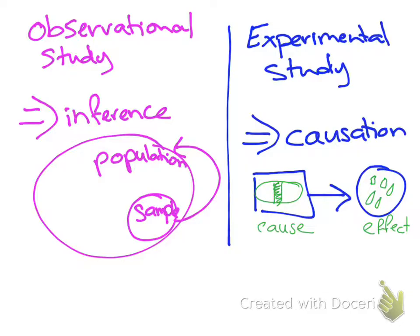Whereas if you've got experimental studies, they are able to use that more formal language, that I can show causation, I can show that there is an effect of doing this on it.